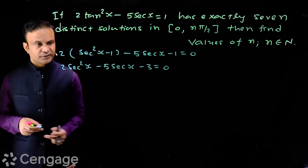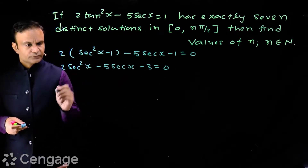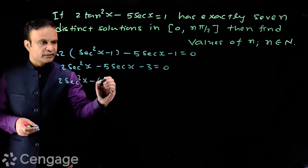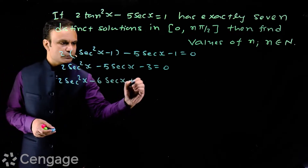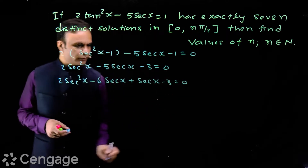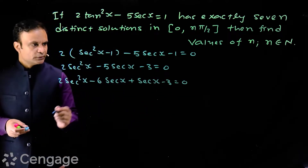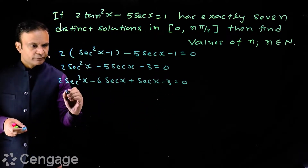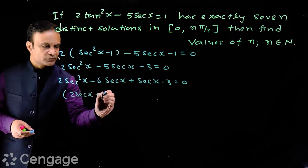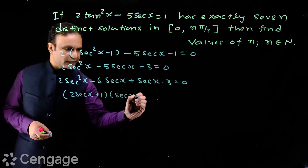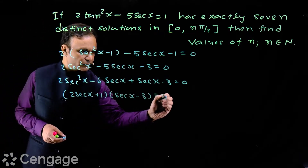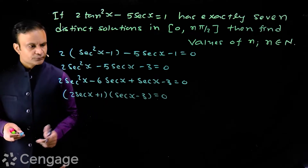We can factorize this expression. We write it as 2sec²x minus 6sec x plus sec x minus 3 equals 0. So we have the factors (2sec x + 1) multiplied by (sec x minus 3), and this product is equal to 0.